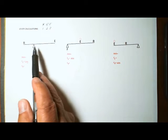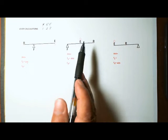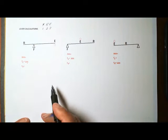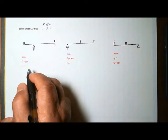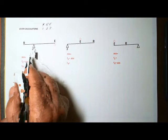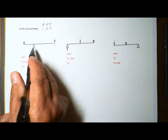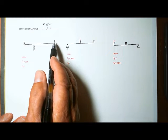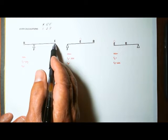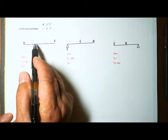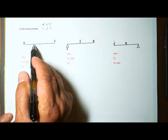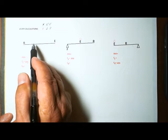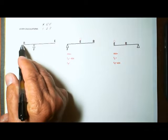So on the paper we have a first class lever, a third class lever, and a second class lever. Let's go ahead and figure out the ideal mechanical advantage for each one. In our first lever, the distance from the fulcrum to where the effort force is applied — the input side — is twice as long as the distance from the fulcrum to the resistance force.